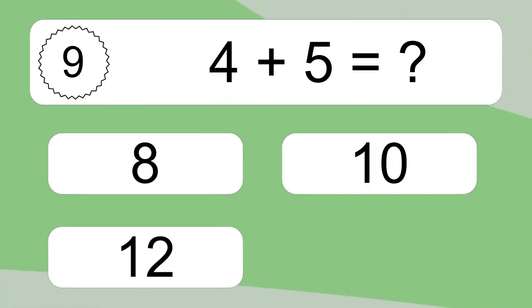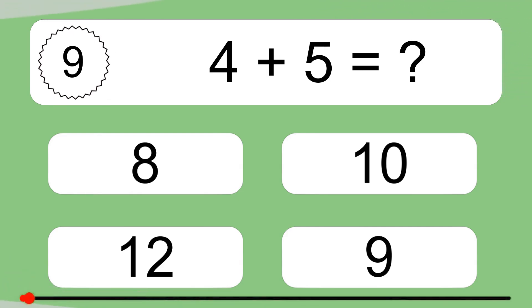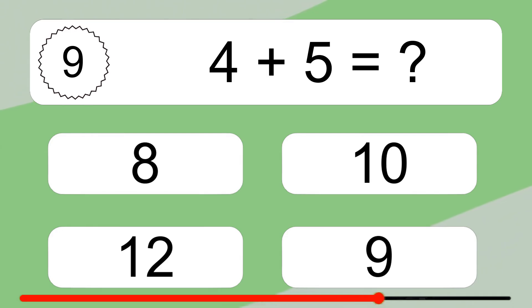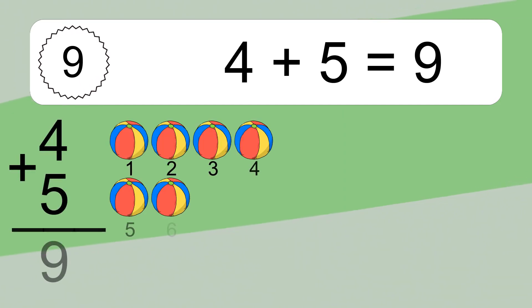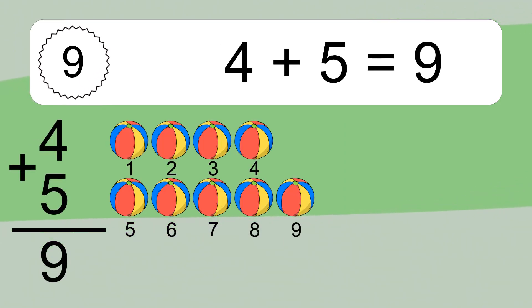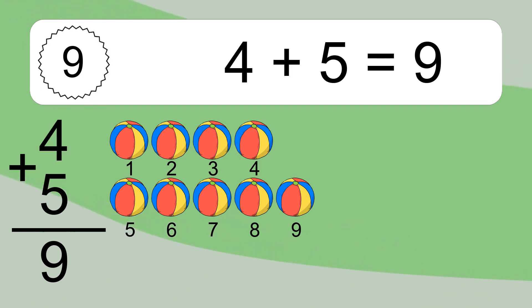4 plus 5 equals what? 4 plus 5 equals 9. Let's count it. 1, 2, 3, 4, 5, 6, 7, 8, 9.